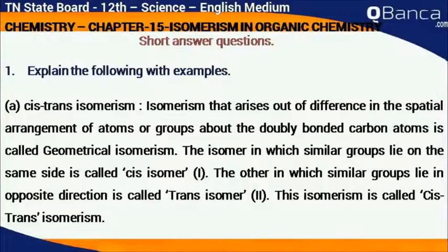Explain the following with examples. Cis-trans isomerism: Isomerism that arises out of difference in the spatial arrangement of atoms or groups about the doubly bonded carbon atoms is called geometrical isomerism.